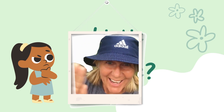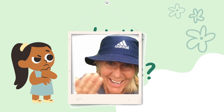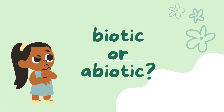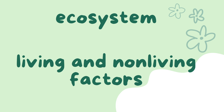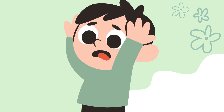Hi, I'm Mrs. Smith, and today we're going to talk about biotic and abiotic parts of an ecosystem. An ecosystem is a community of interacting living things and their environment. It's made up of living and non-living factors.